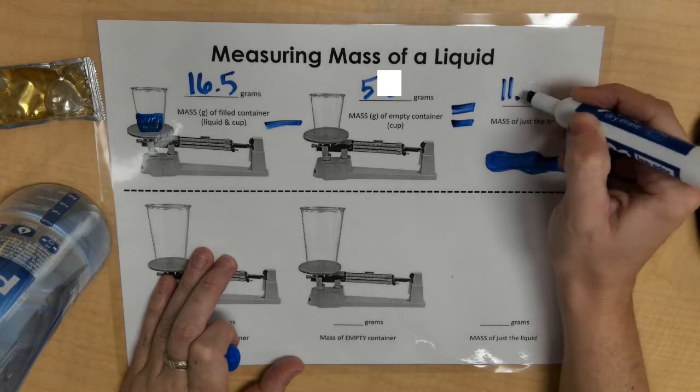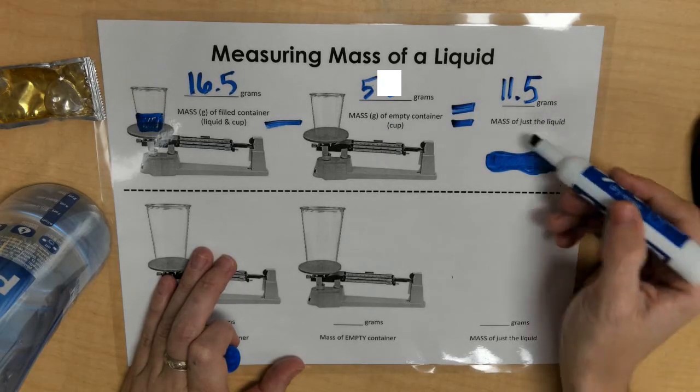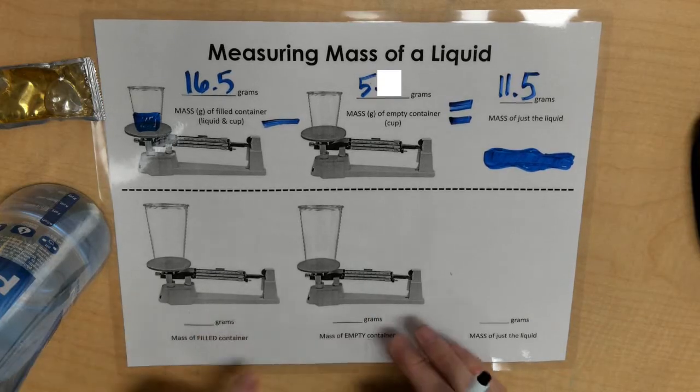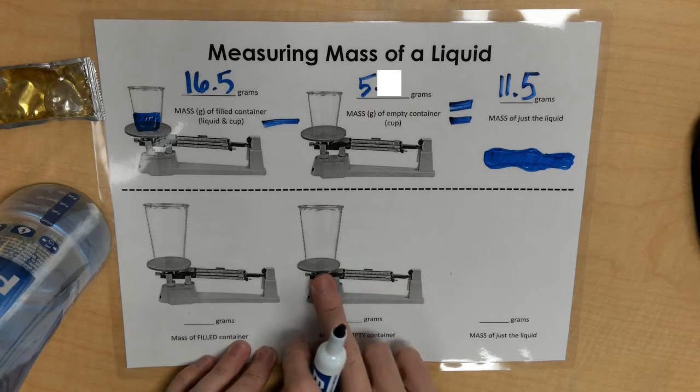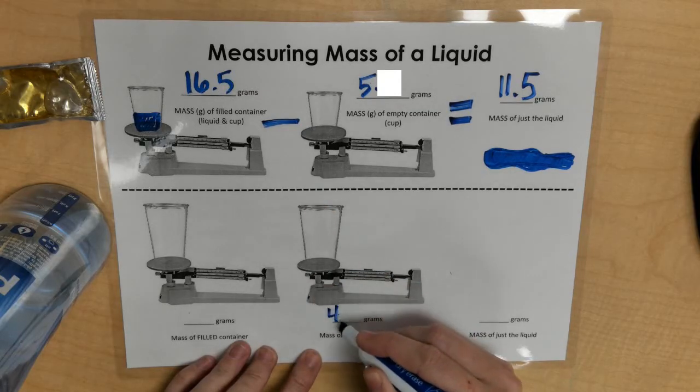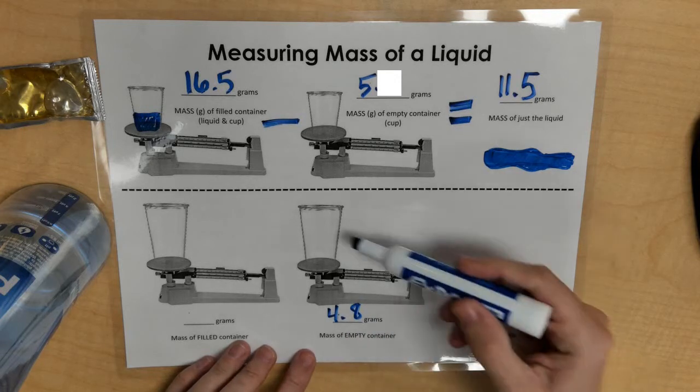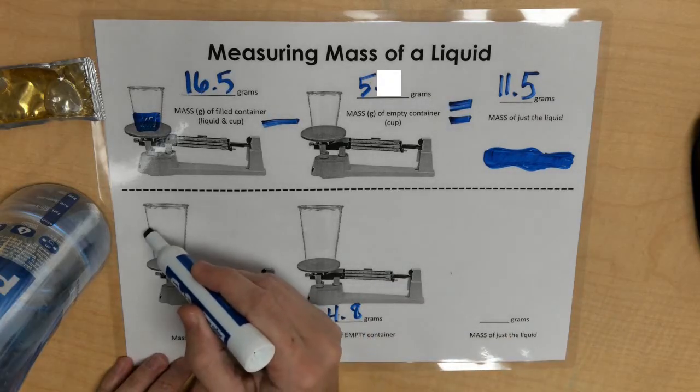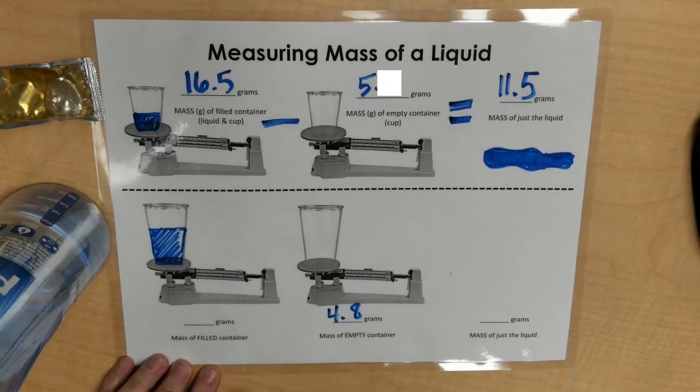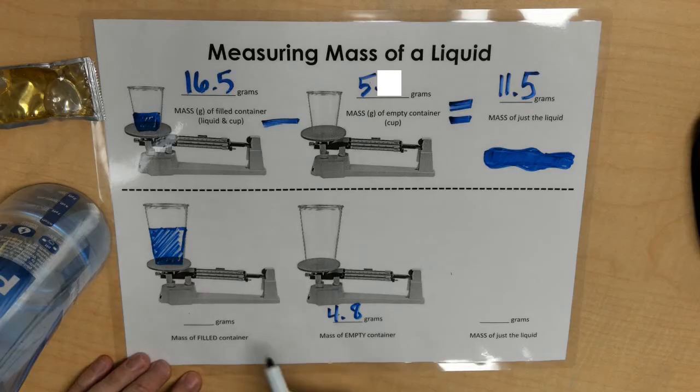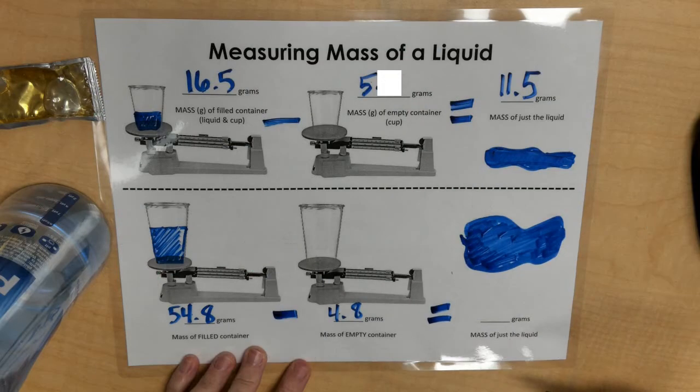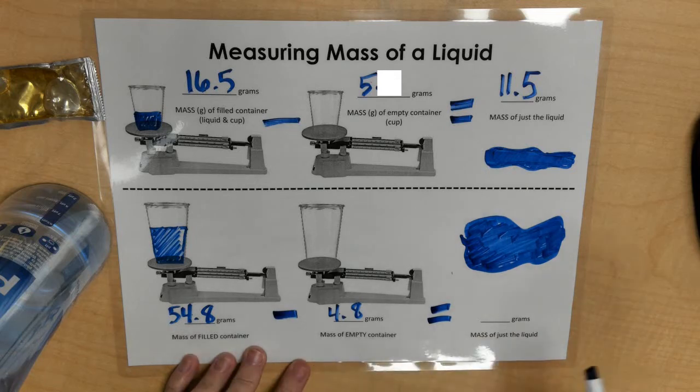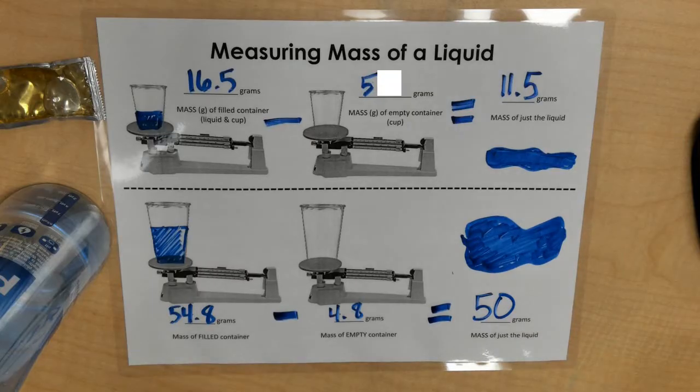Now with my water bottle, again, I took the measurement of the mass for just my container. And I used a different container. And I began with a mass of 4.8 grams for just my container. Then I poured my water inside. And that mass of my filled container came out to be 54.8 grams or 54 and 8 tenths grams. And that leaves me with the mass of my liquid water, which in this case, 54.8 minus 4.8 leads me with 50 grams for my water.